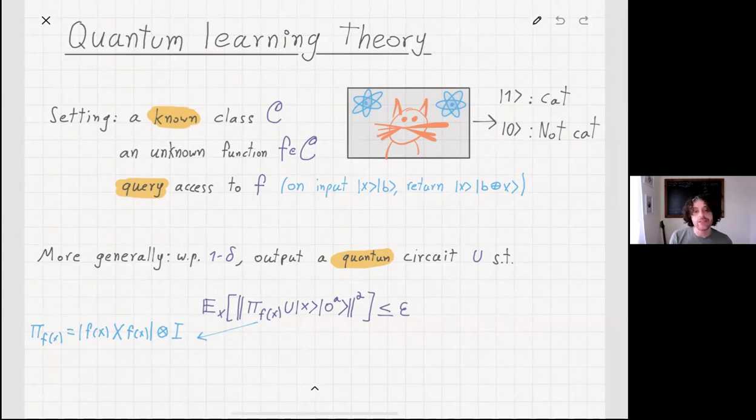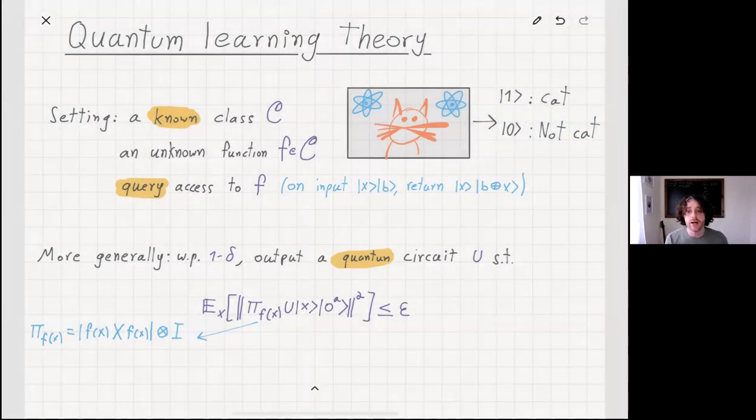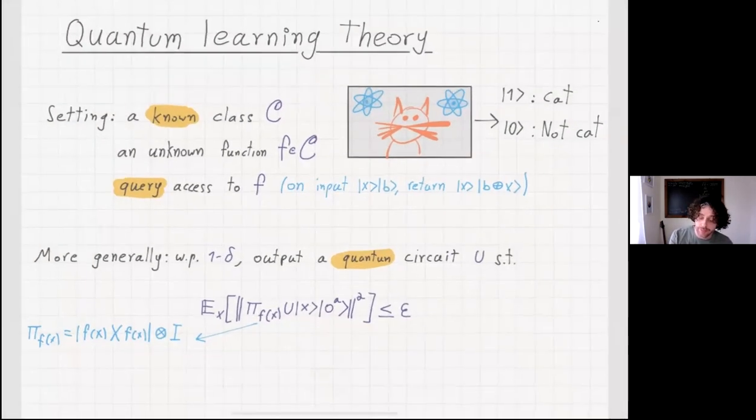In fact, we also allow more generally, instead of just outputting a classical circuit, we can output a quantum circuit U. The quantum circuit will essentially be fed with the input and then some ancillas, and we want that with high probability, if we will measure, we will get the correct answer, except in small probability of error.